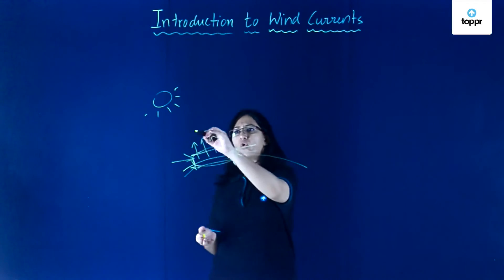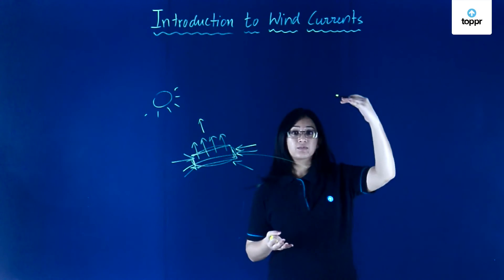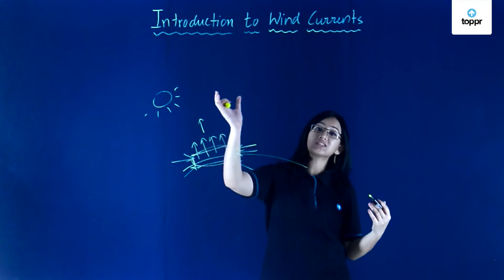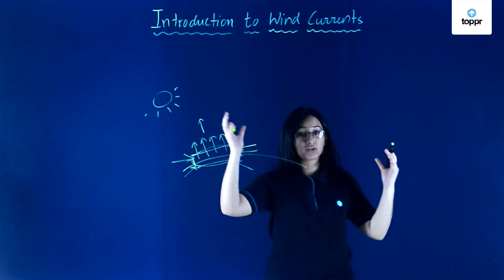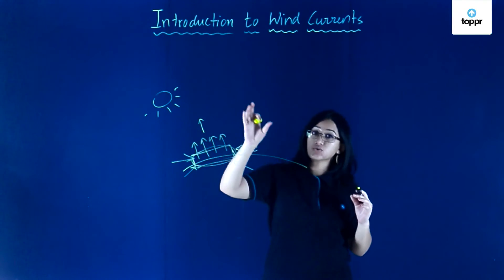Now what happens when this warm air rises up? As it goes up into the atmosphere, it would also cool down. Yes. So once it cools down, it becomes heavy because it comes back together again or it contracts, and it starts to sink.